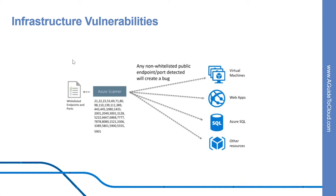Now let's look into infrastructure vulnerabilities. In addition to validating the application, the infrastructure should also be validated to check for any vulnerabilities. When using the public cloud such as Azure, deploying the application and shared infrastructure is easy, so it's important to validate that everything has been done securely. Azure includes many tools to help report and prevent these vulnerabilities, including Security Center and Azure Policies. We have set up a scanner that can ensure any public endpoints and ports have been whitelisted, or else it will raise infrastructure issues.